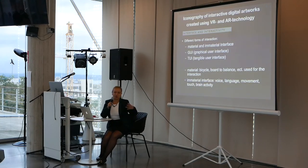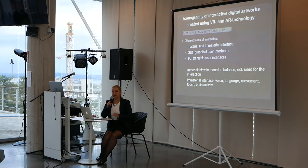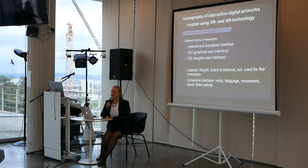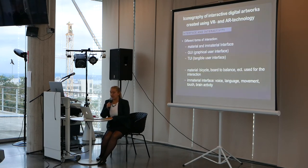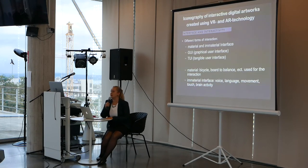We distinguish, for instance, between material and immaterial interfaces. A graphical user interface (GUI) is one of the simplest — a mouse and keyboard. Or we have tangible user interfaces that are material; for instance, Jeffrey Shaw used a bicycle as an interface to navigate through a city.